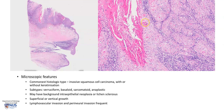We can see this tumor has some degree of keratinization. The subtypes include verruciform, basaloid, sarcomatoid, and anaplastic. There may be a background of intraepithelial neoplasia or other conditions such as lichen sclerosis, which we mentioned is a risk factor. Lymphovascular invasion or perineural invasion are frequent findings.